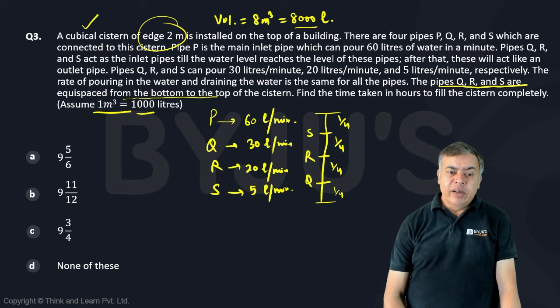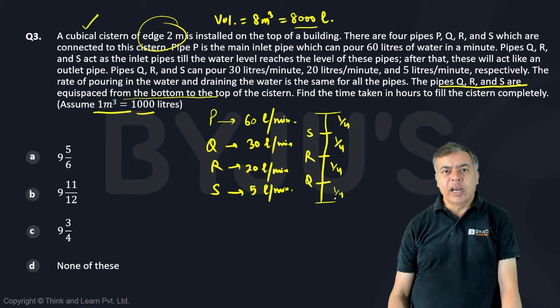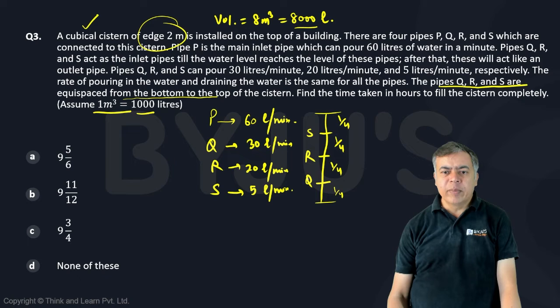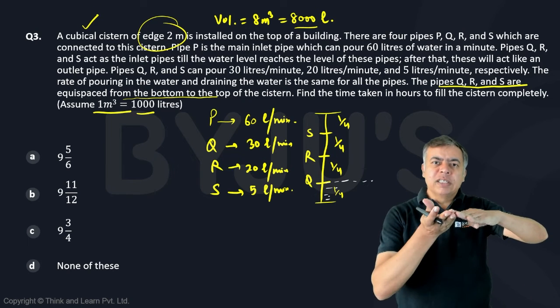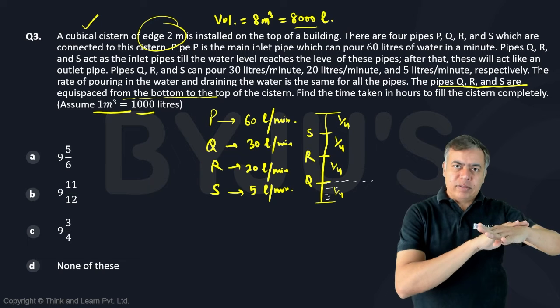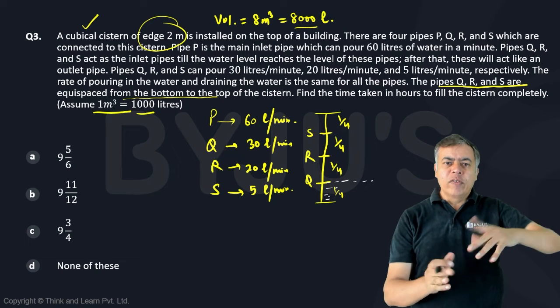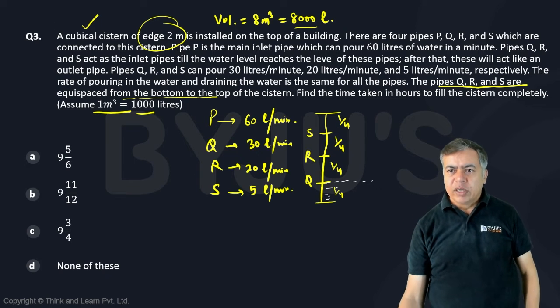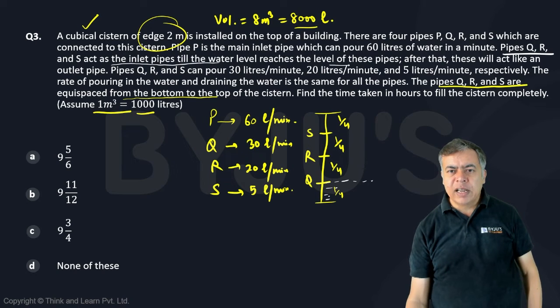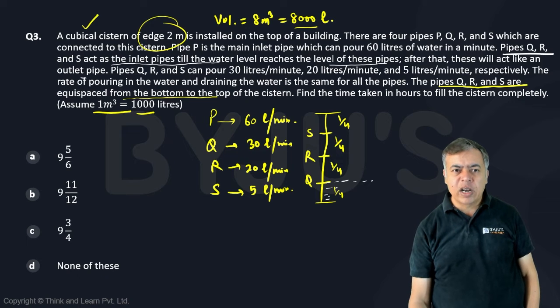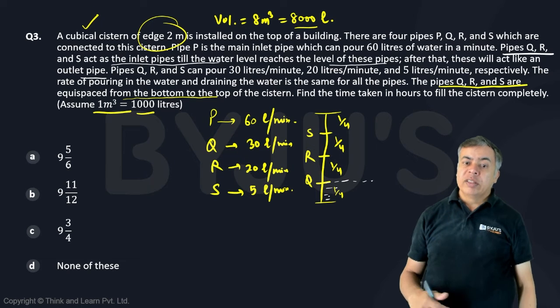So what will happen that we are filling it with the help of all the inlet pipes. So all are inlet till the moment we reached here. So when this is filled till this point, till the Q height, where Q inlet is there, once the water level reaches that, it will become an outlet. So initially it was inlet, now it will become outlet. It is given here that pipe QRS act as inlet pipe till the water level reaches the level of these pipes. After that, these will act as an outlet pipe.